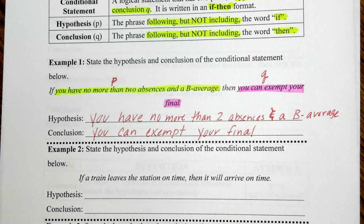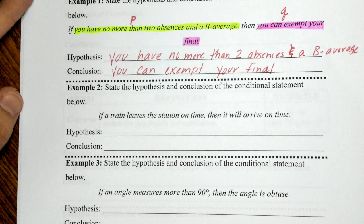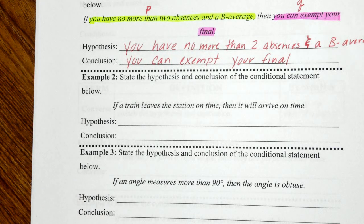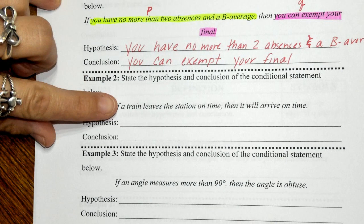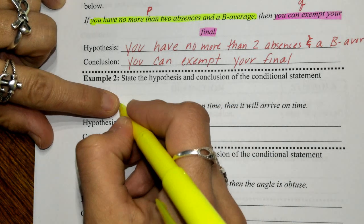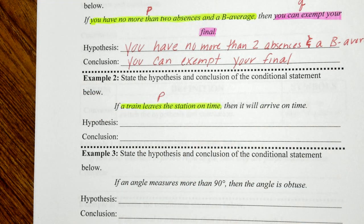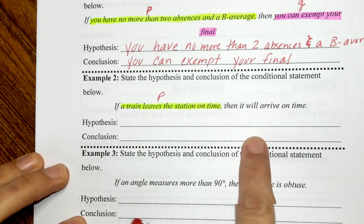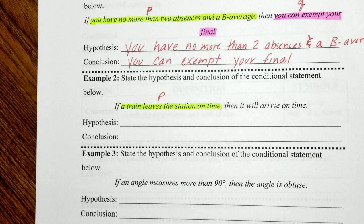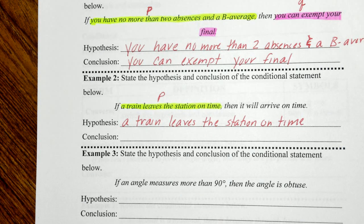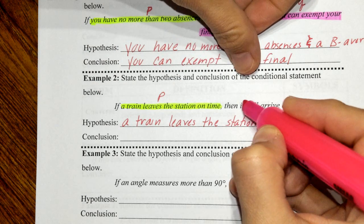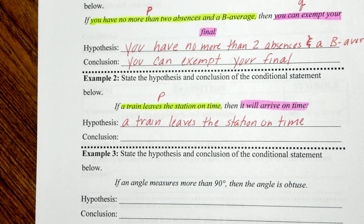Let's look at the next example: 'If a train leaves the station on time, then it will arrive on time.' The hypothesis P, after 'if,' is: 'a train leaves the station on time.' The conclusion Q, after 'then,' is: 'it will arrive on time.' Go ahead and pause to write those under your hypothesis and conclusion sections.